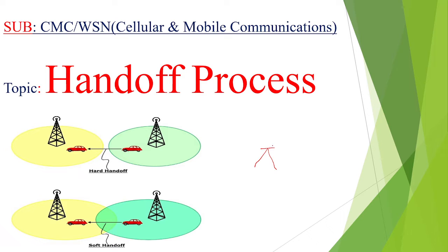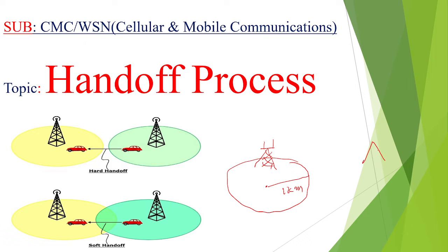For example, this is the cell site and this is the coverage area. Just assume that the coverage area is one kilometer. So this is cell site one, and one more cell site is here. This is also one kilometer range for coverage area.